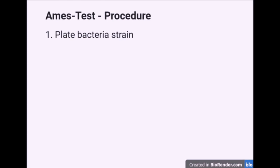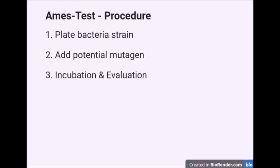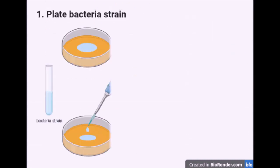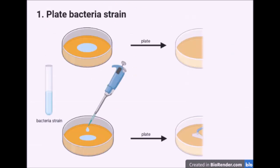Now that we have learned something about the theoretical background of mutagenicity, we will have a closer look at the three major steps of the Ames test procedure, taking the mutated auxotrophic form of Salmonella typhimurium as an example. As already mentioned, it requires an exogenous histidine source to be able to grow. In the first step, the mutated bacterial strain is planted on two different agar plates by distributing it evenly on the surface. The agar does not contain the amino acid histidine.